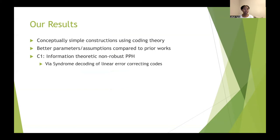Our first construction is an information-theoretic non-robust PPH, which uses syndrome decoding of linear error correcting codes. And in our work, we also prove a lower bound that shows that this construction is essentially optimal.